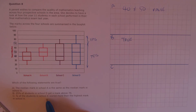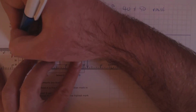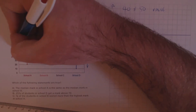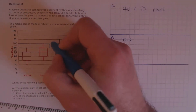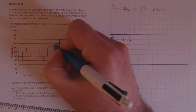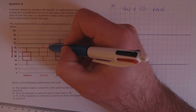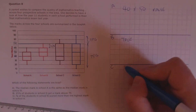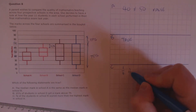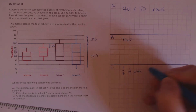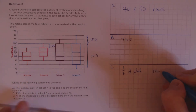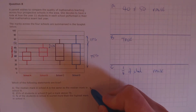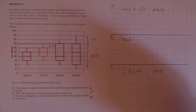C: three quarters of the students in school B scored more than the highest mark in school A. First, let's draw across from the highest mark for school A — that's 60. We can see that hits the upper quartile of school B. We know that 25% of the scores in school B are between there and their highest value, so only a quarter of school B scored more than the highest mark — which is false. Finally, we have false, true and false.